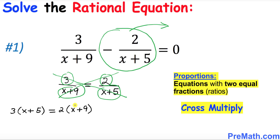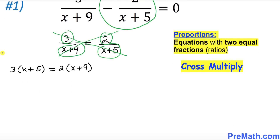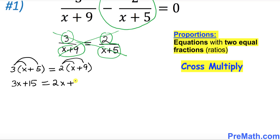Let's go ahead and distribute. I'm going to multiply 3 with both terms, so this simply becomes 3x plus 15. Likewise, we distribute on the right side, so this becomes 2x plus 18. Now I want you to subtract 2x from both sides, so the 2x terms cancel.